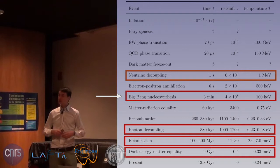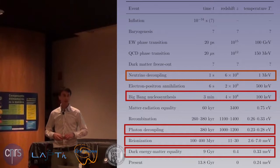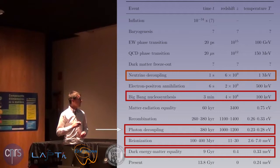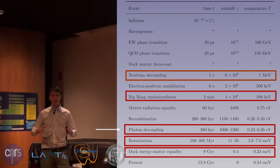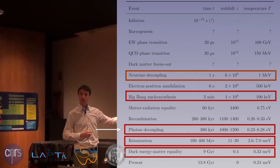Apart from the observed expansion, this is a very important argument in favor of the Big Bang theory: the fact that the elements have the right abundances in the universe. Another event in the universe that we have observational access to is the decoupling of the photons. From one moment to the other, the universe became transparent.